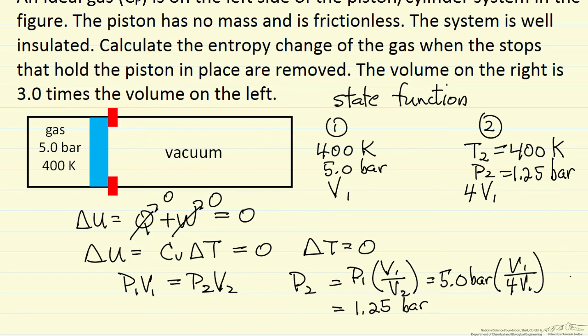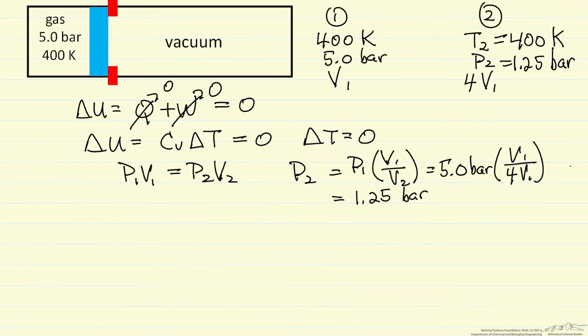Now we can calculate the entropy change. For an ideal gas, entropy change in general is related to temperature change, T2 over T1, and the pressure change, P2 over P1. Of course this term is zero because T2 is equal to T1, so the log of one is zero.